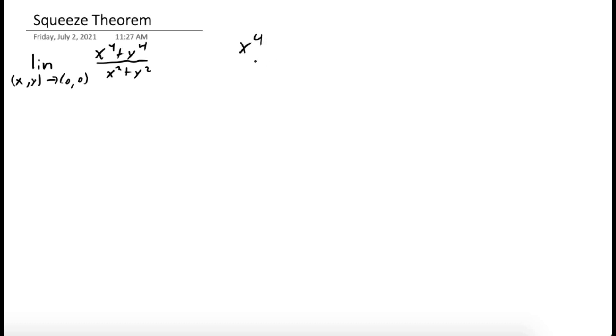Okay, so the first thing to notice is that x to the fourth and y to the fourth are both non-negative, meaning they're greater than or equal to 0. So we have a lower bound for our function, right, 0 is less than or equal to x to the fourth plus y to the fourth over x squared plus y squared.